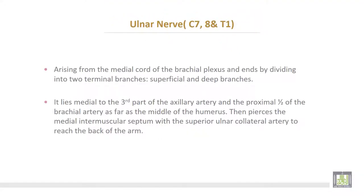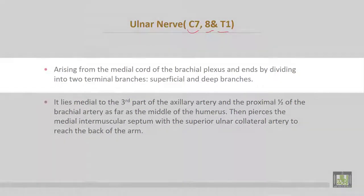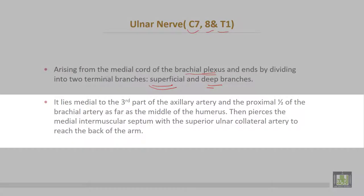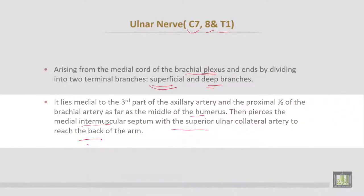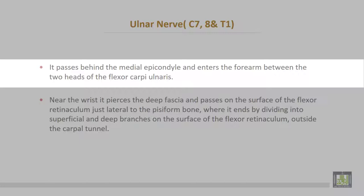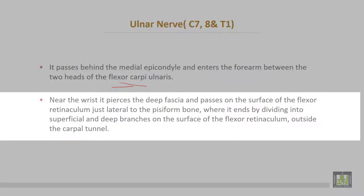The ulnar nerve has root values C7, C8, and T1, arising from the medial cord of the brachial plexus and ending by dividing into superficial and deep branches. It lies medial to the third part of the axillary artery and the proximal half of the brachial artery as far as the middle of the humerus, then pierces the medial intermuscular septum with the superior ulnar collateral artery to reach the back of the arm. It passes behind the medial epicondyle, enters the forearm between the two heads of flexor carpi ulnaris, and near the wrist passes on the surface of the flexor retinaculum, outside the carpal tunnel, just lateral to the pisiform bone.